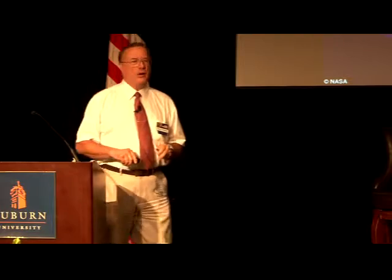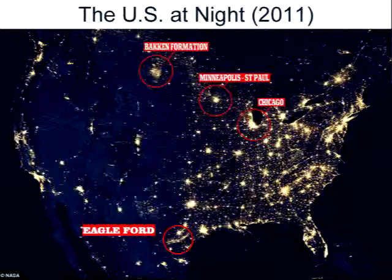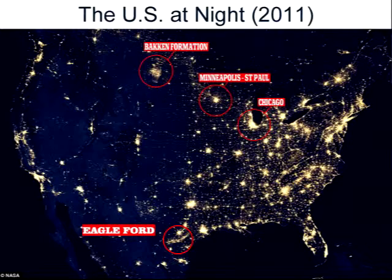Here's a satellite photo of the continental U.S. You see something glowing very bright in North Dakota and also this crescent here in West Texas. This is the Bakken Formation, and that's the Eagleford.